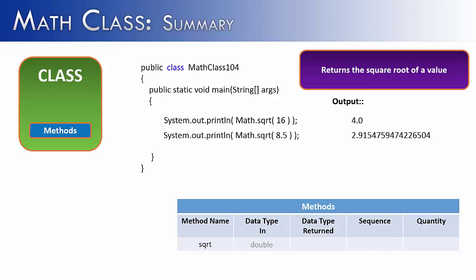The name is square root. The data type in is a double. Looking at the example, you might say that 16 is an integer, not a double — but that 16 is going to be converted into a double when it goes into the method. That conversion isn't shown because you're taking an integer, a smaller value, and putting it into a larger data type like a double, so the computer doesn't need to tell you. The return type is also a double — even if the square root of 16 is an even value of 4, it returns 4.0. It always takes in a double and returns a double. Sequence doesn't matter here because there's only one value being passed, and the quantity is one.